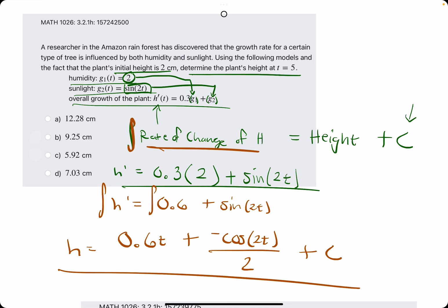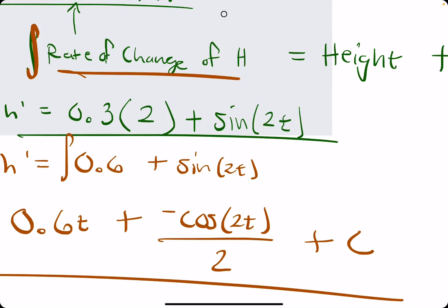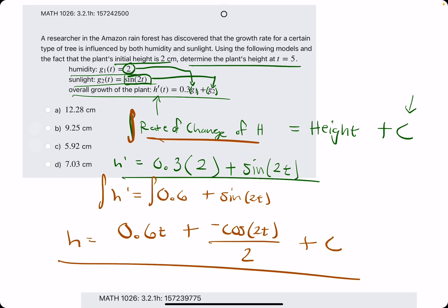Our potential height equation is this. So all we need to do now is use the initial height of 2 centimeters to solve for C, and then we'll plug in 5 to this complete function, and then we'll have our height.